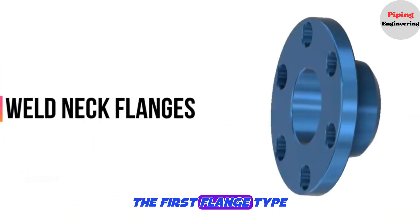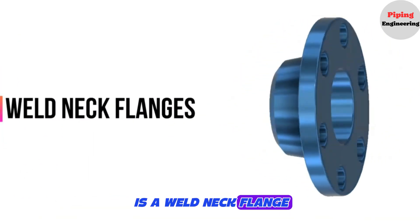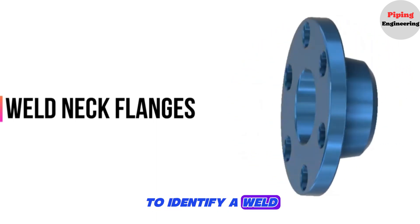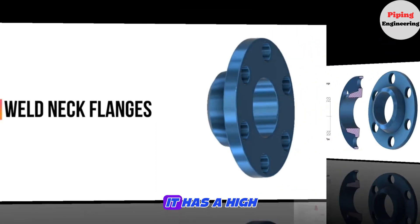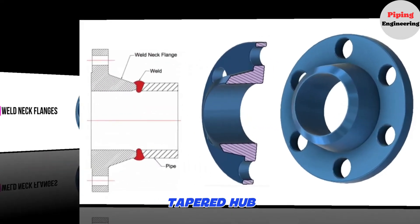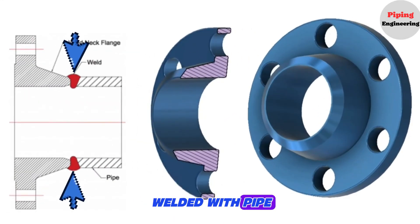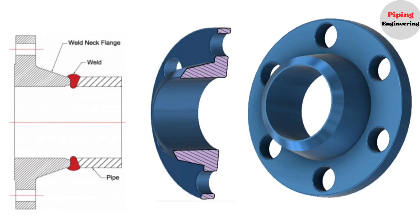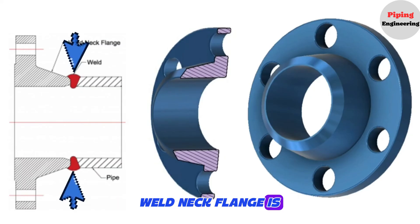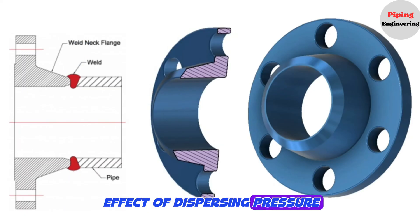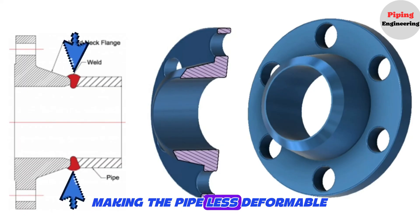The first flange type is a weld neck flange. It is very easy to identify a weld neck flange from the appearance because it has a high, tapered hub like a neck. This neck will be welded with pipe so it has the same wall thickness as pipes. Weld neck flange is welded to pipe with full penetration weld. It also has the effect of dispersing pressure, making the pipe less deformable.